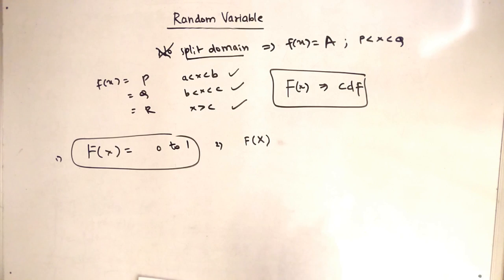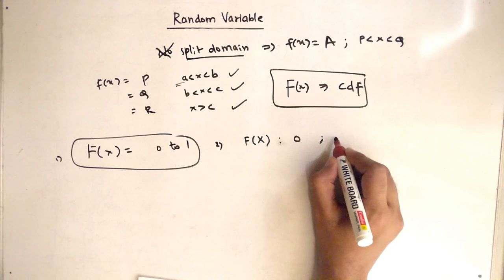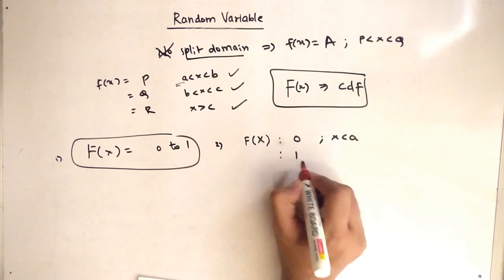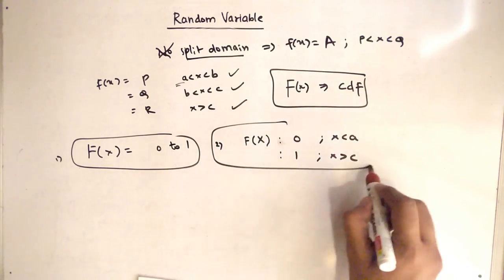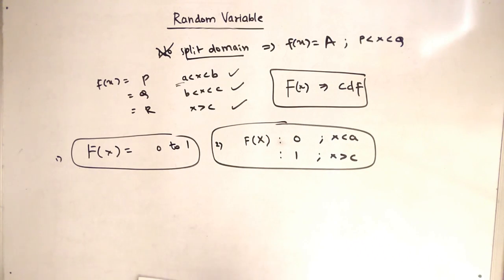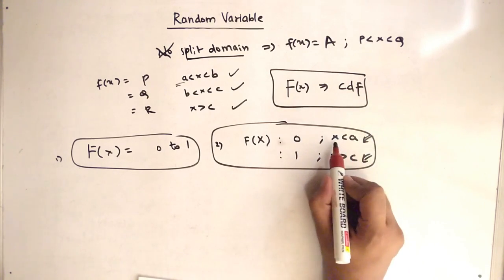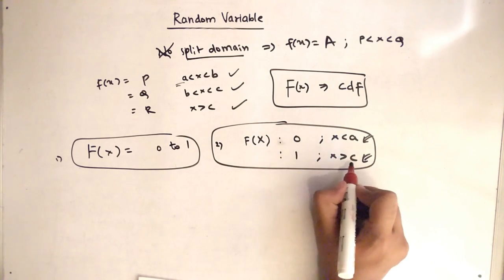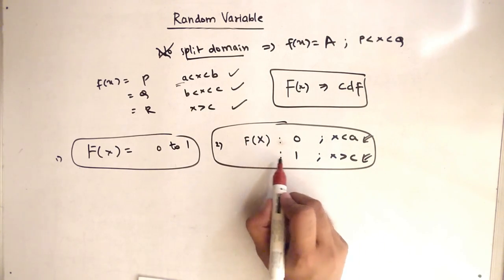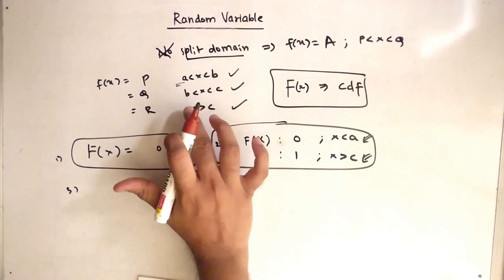When small x is less than a, capital F(x) is 0. When x is greater than c, capital F(x) is 1. This will be common across all piecewise CDF definitions: at the smallest value of x, F(x) = 0, and at the greatest value of x, F(x) = 1.